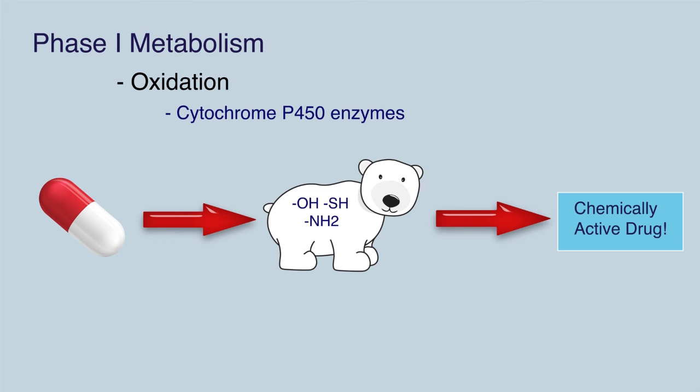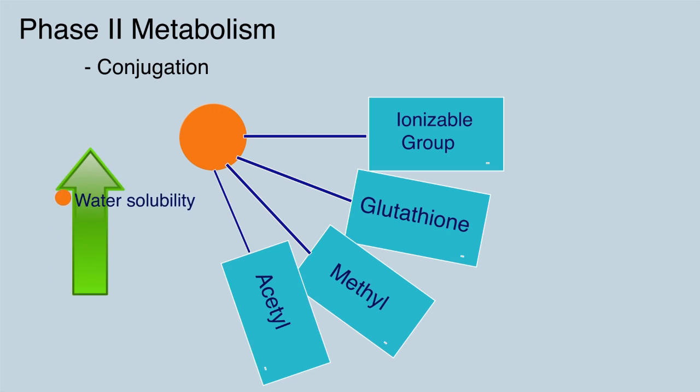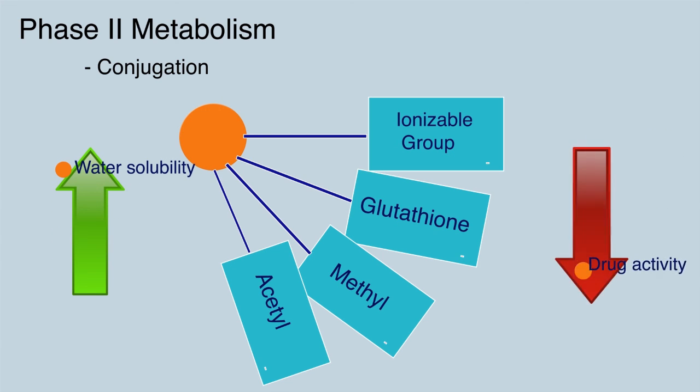Phase 2 involves conjugation reactions, which means attachment of an ionized group to the drug. These groups include glutathione, methyl or acetyl groups. The attachment of an ionized group increases the water solubility of the metabolite as well as decreases the pharmacological activity.